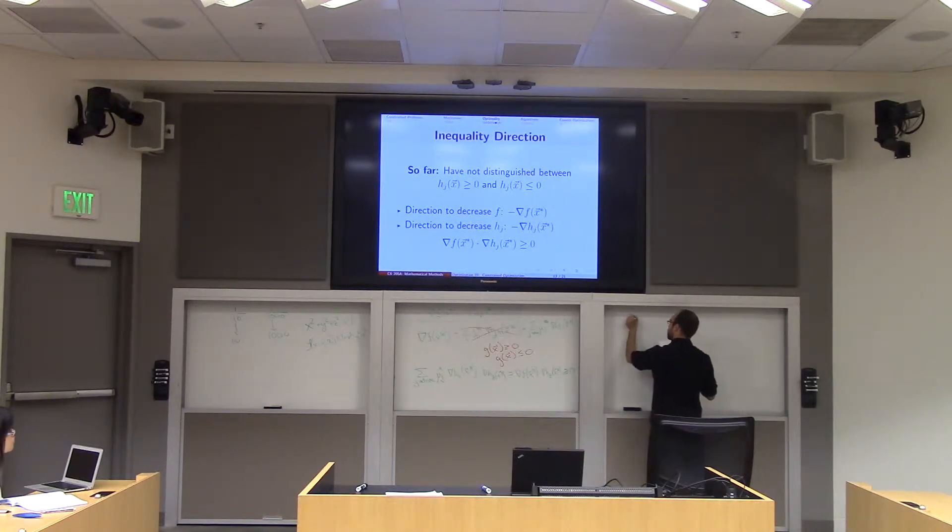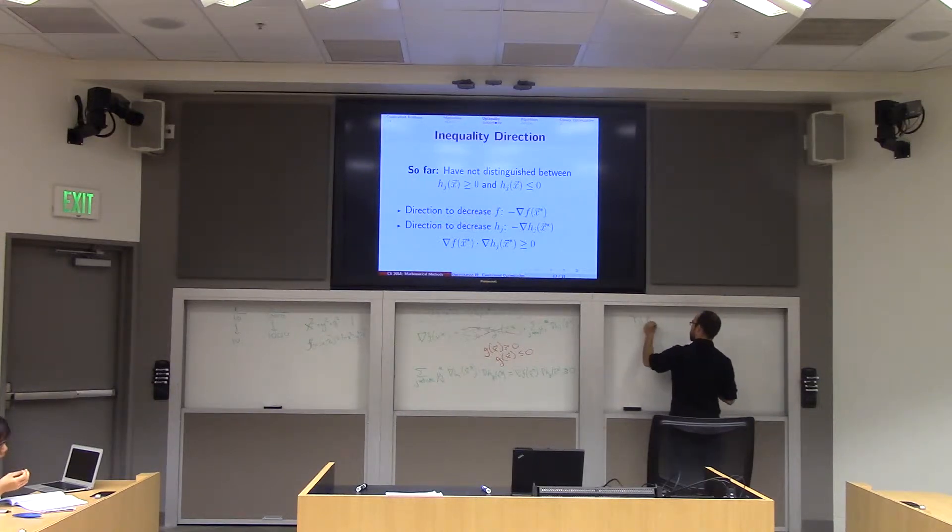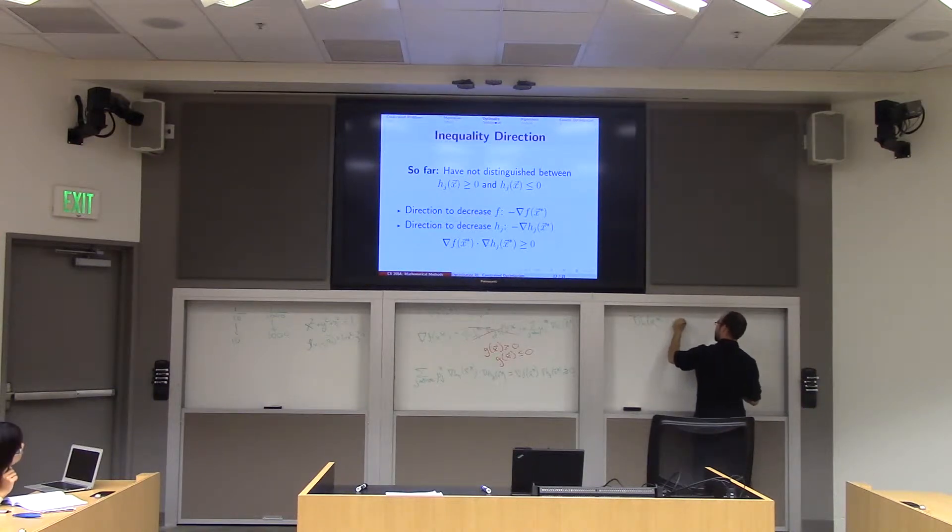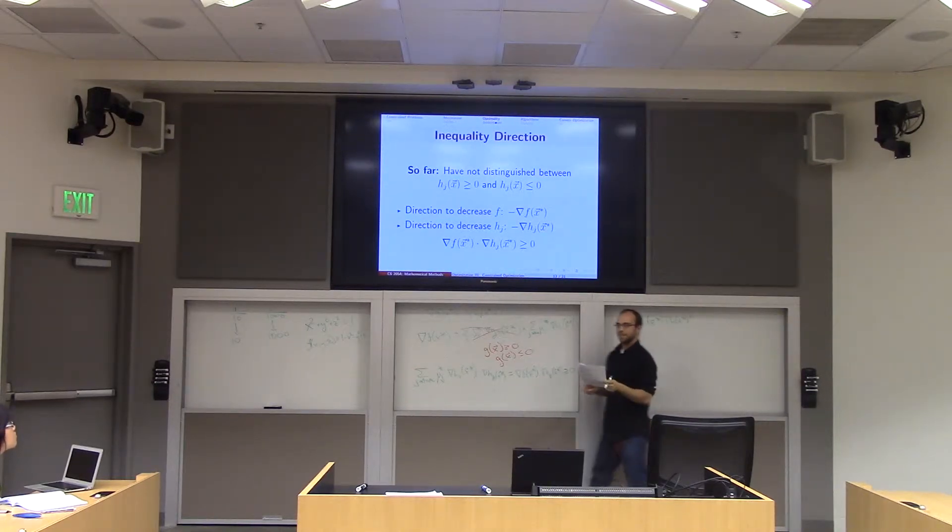This tells us that the Jacobian of h, now h is a function with more than one input and more than one output. So we're not going to separate out all the h_k's, right? The Jacobian of h at x star times the Jacobian of h at x star, again, but transposed, right? That kind of looks like this.